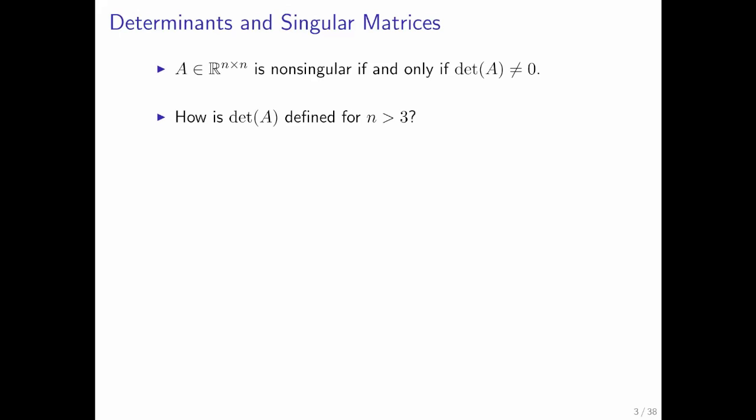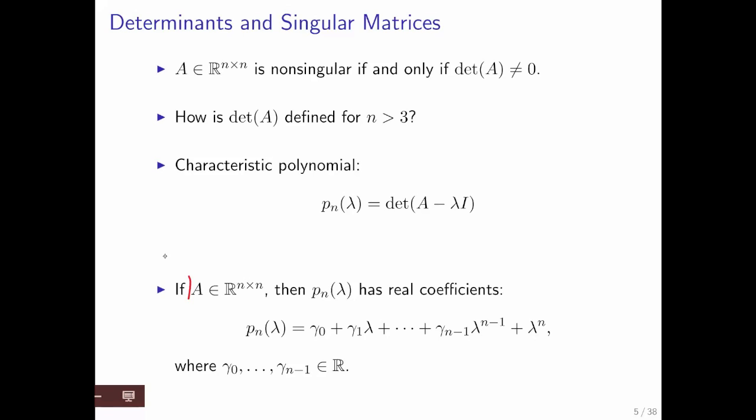What we're instead going to look at is what the implications are of the existence of the determinant and what it means for the determinant of A minus lambda I. So the determinant of A minus lambda I is again a polynomial. It turns out to be an nth degree polynomial if the matrix is n by n. And if A has real-valued elements, then its characteristic polynomial has real-valued coefficients.